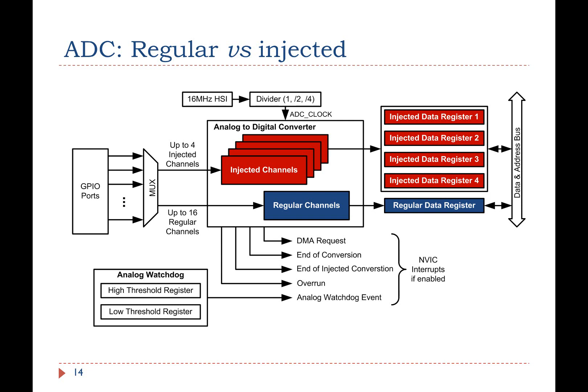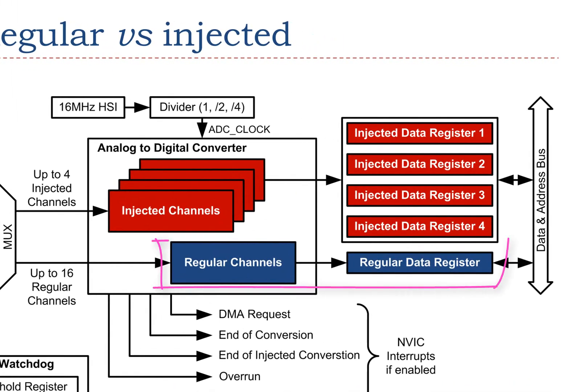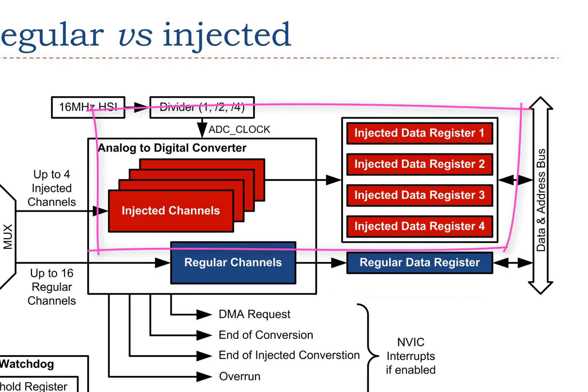This is the diagram of one ADC module. Each ADC module is a 12-bit successive approximation converter. Each converter can support a total of 16 regular channels and 4 injected channels. The ADC module can convert up to 16 regular channels in any desired order. Each channel can have different sampling period. All regular channels share the same ADC data register. However, each individual injected channel has its own dedicated ADC data register.